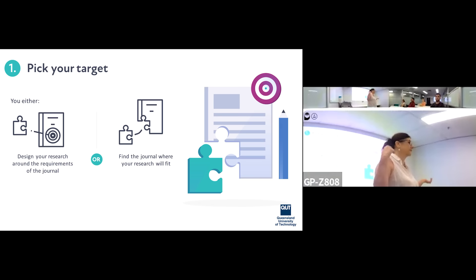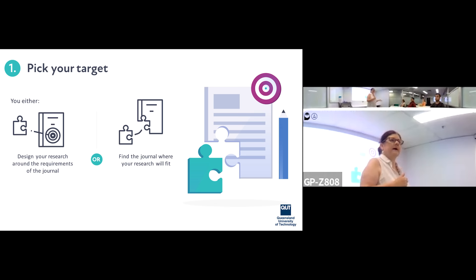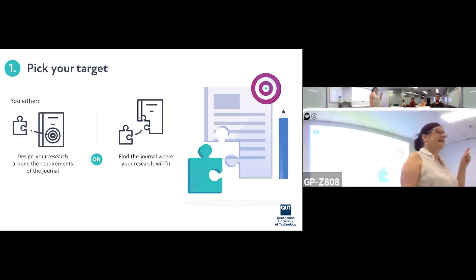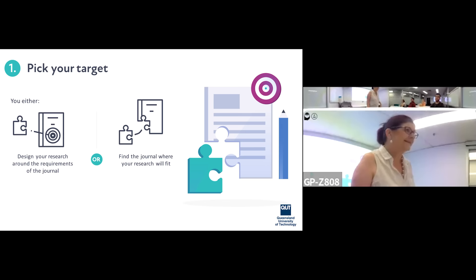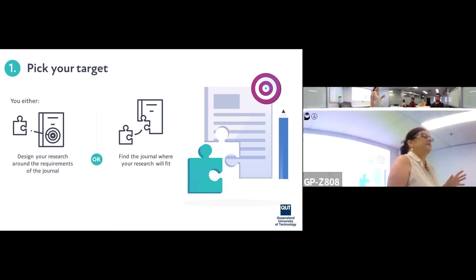Moving to the deconstruction phase. Think of Lego blocks: what we all see when we read a journal article is the finished house — the beautiful product. What we don't see is the number of times it had to be redone, and all the work that got left behind. I actually have a folder called the 'publication graveyard' for papers that never made it. But nothing's ever really dead — you can come back to them years later, collect new data, and revive them.